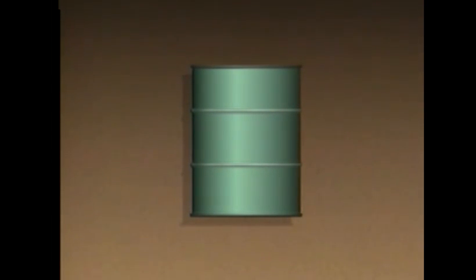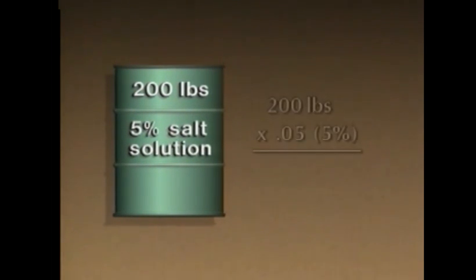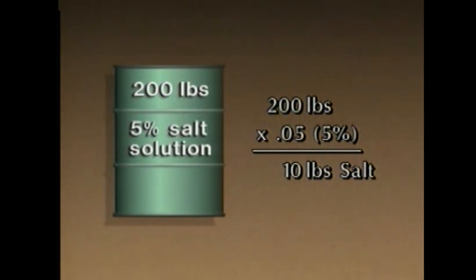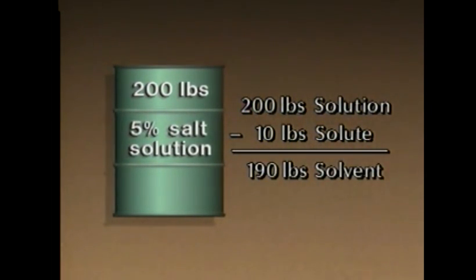Figuring out the weights of the materials in a percent by weight solution is simple if you know the percentage of solute and the weight of the solution. For example, if this drum contains 200 pounds of a 5 percent by weight salt solution, we can calculate how much solute — which is the salt — and how much solvent the drum contains. The first step is to multiply the weight of the solution by the percent of solute: 200 pounds times 5 percent equals 10 pounds. So there are 10 pounds of salt in the drum. Now we can use subtraction to find the weight of the solvent: 200 pounds minus 10 pounds equals 190 pounds of solvent.